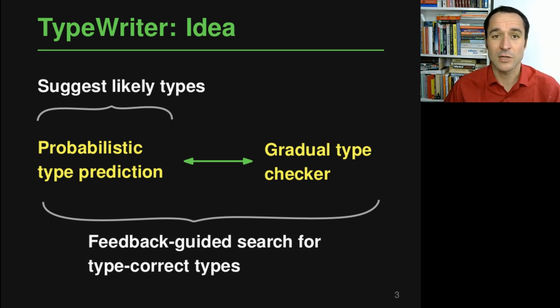It's a deep learning based model that looks at many pieces of information in your Python code and then suggests likely types. Then we are combining this with a gradual type checker that is type checking the code, and we use this to perform a feedback guided search for type correct types among the predictions made by the probabilistic model.